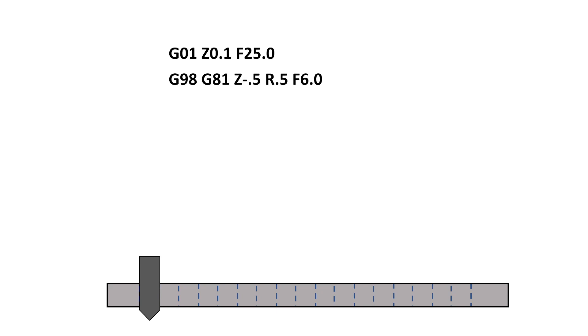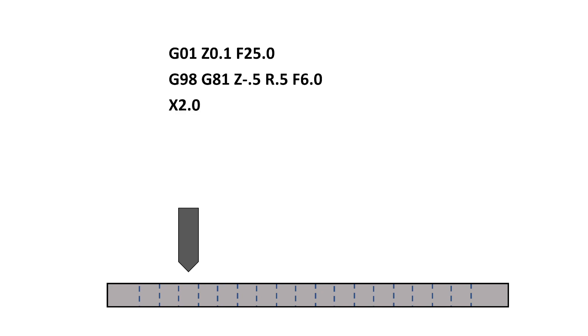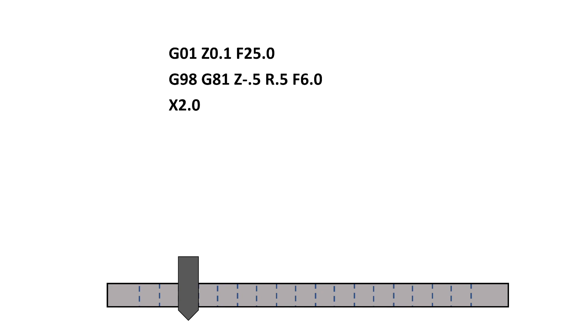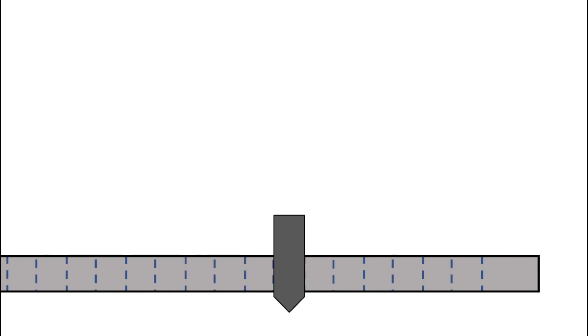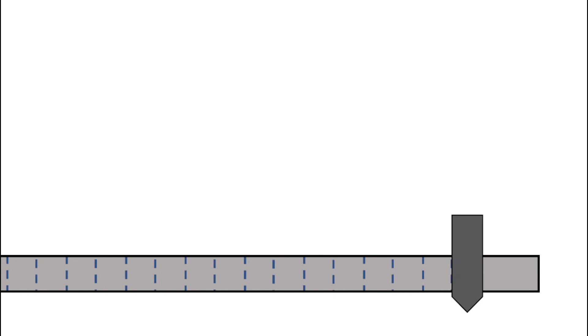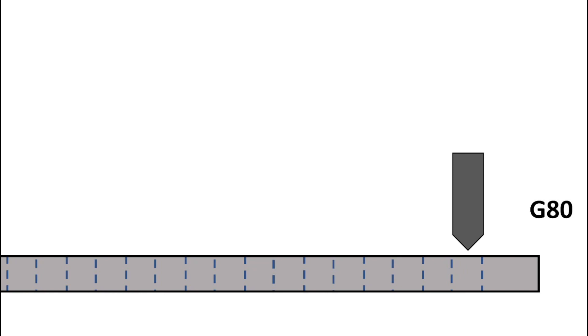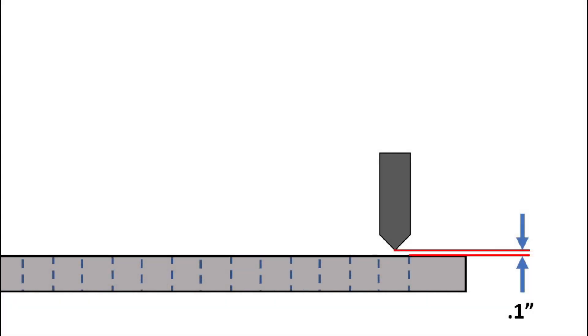Once this hole is drilled, the tool will retract to 0.5 inches above the part and then read the next line, X2.0. The tool will move to this new position and then cut the next hole with the same parameters as the first. Once all the holes are cut, the G80 is read by the machine and the G98 becomes active. Notice the tool does not return to 0.5 inches above the workpiece, but it returns to the initial plane which is 0.1 inches above the workpiece.